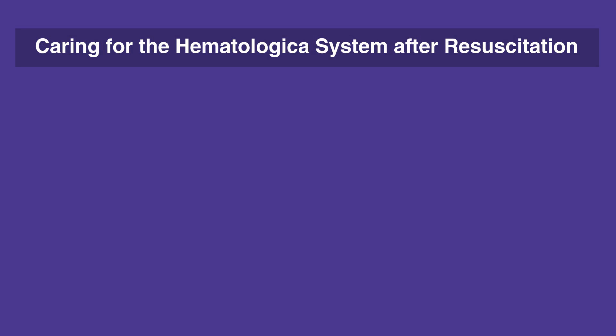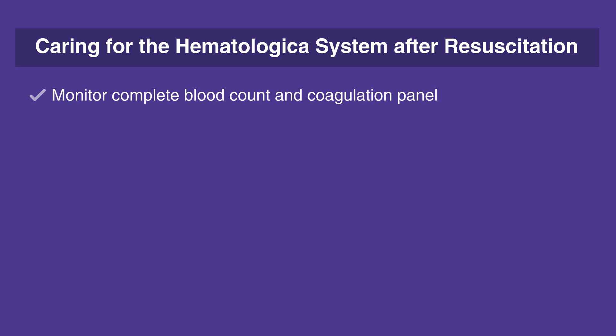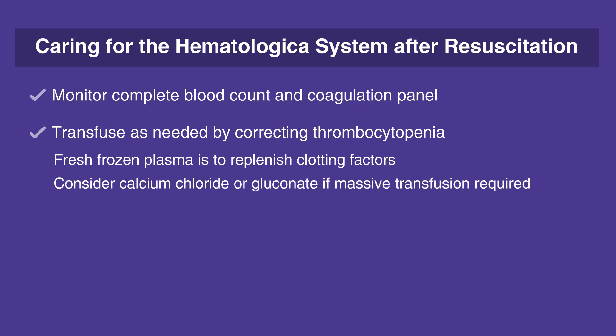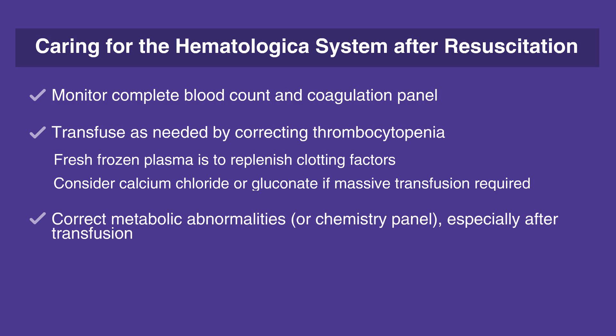When caring for the hematological system after resuscitation, follow this checklist: Monitor complete blood count and coagulation panel. Transfuse as needed by correcting thrombocytopenia. Fresh frozen plasma is used to replenish clotting factors. Consider calcium chloride or gluconate if massive transfusion is required. Correct metabolic abnormalities with a chemistry panel, especially after transfusion.